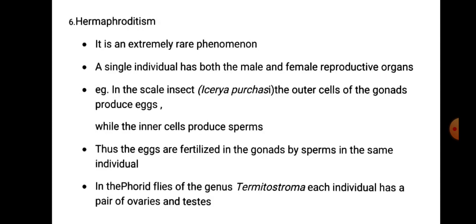Next is hermaphroditism. This is an extremely rare phenomenon where a single individual has both male and female reproductive organs. Example: in the scale insect Icerya purchasi, the outer cells of the gonads produce eggs while the inner cells produce sperms; thus, the eggs are fertilized in the gonads by sperms of the same individual.